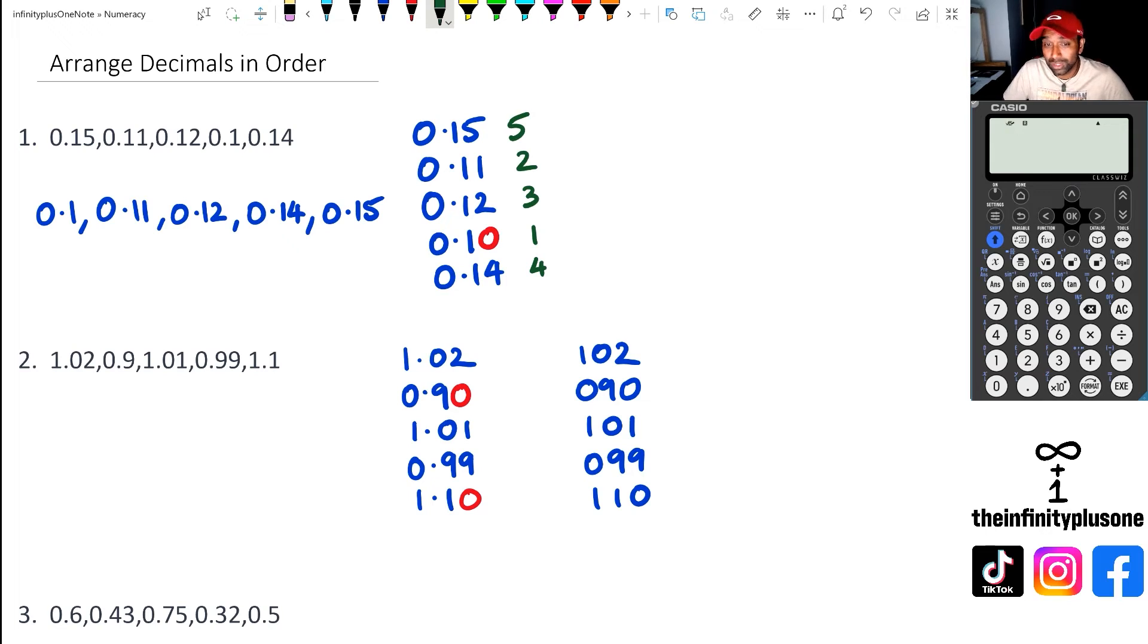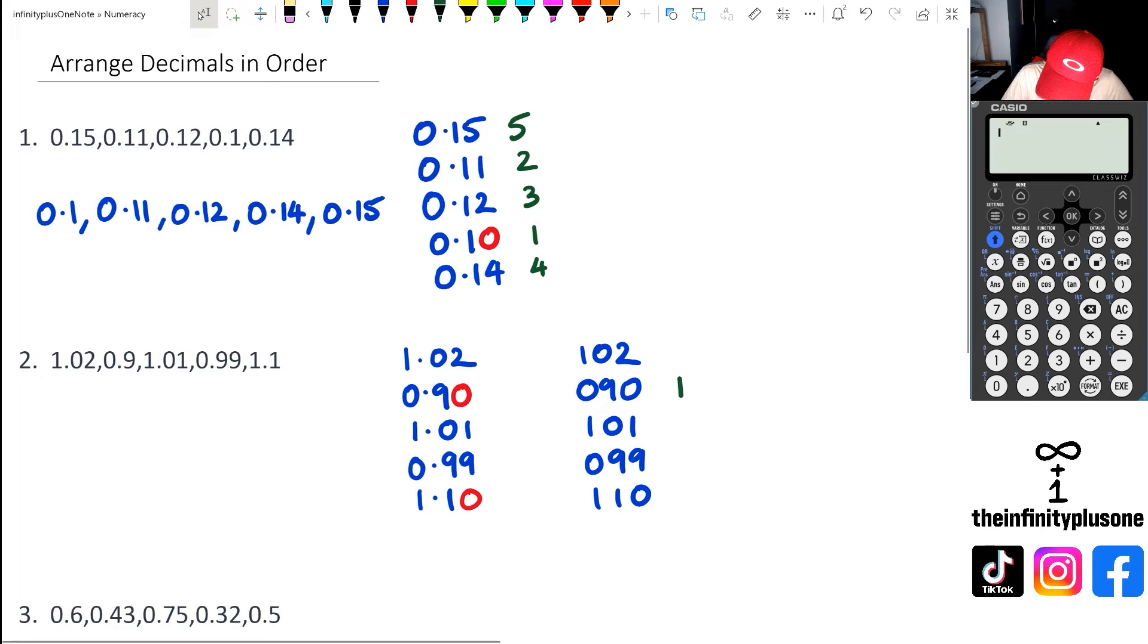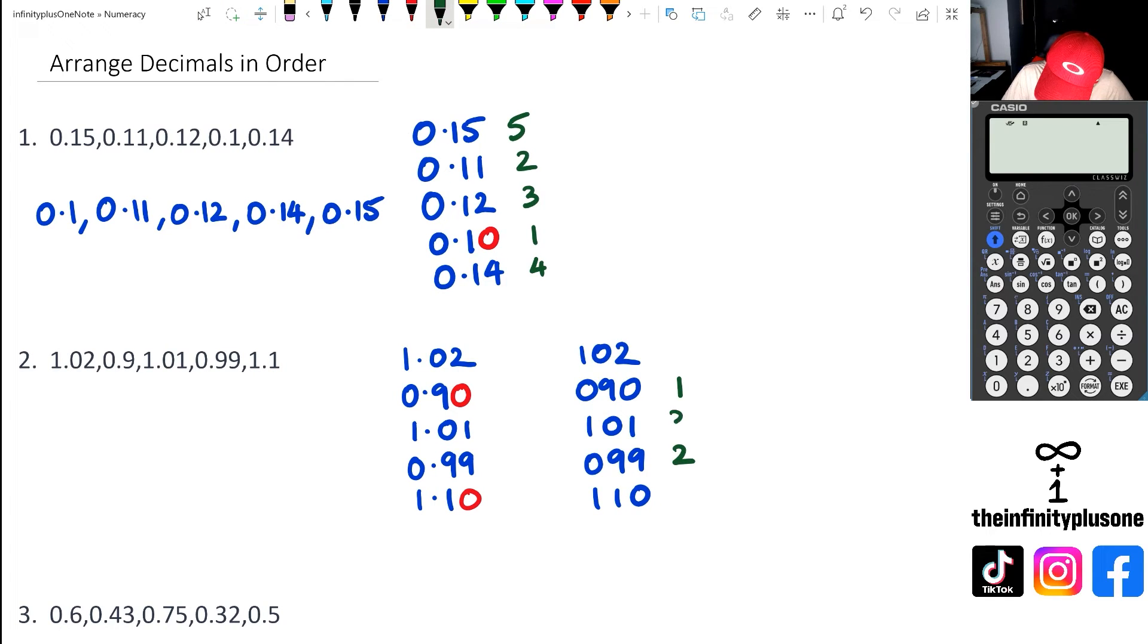I'm going to look at the smallest number and right now I can see the smallest number is 90. The next number after 90 is 99, then I've got 101, 102, and then I've got 110.